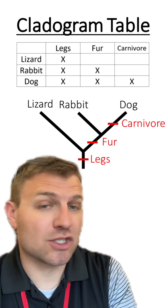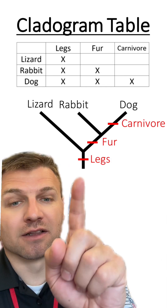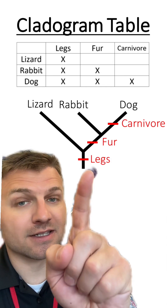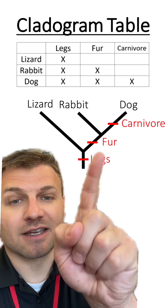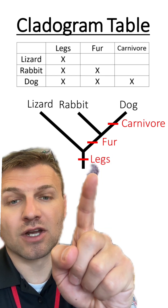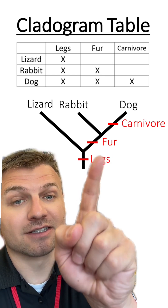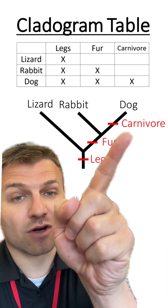And if we look and check our work: the lizard has legs, the rabbit has legs and fur, while the dog has legs, fur, and is a carnivore.